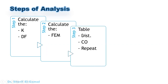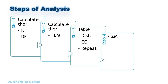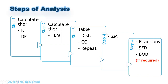Step three: make a table. From that table, we can perform the distributions and carry-overs, then repeat until we reach good accuracy. After that, we get the summation of bending moments for each column in the table to get the final moments. Finally, if required, you can calculate reactions and draw the shear force and bending moment diagrams. We can also stop at the summation of bending moments.